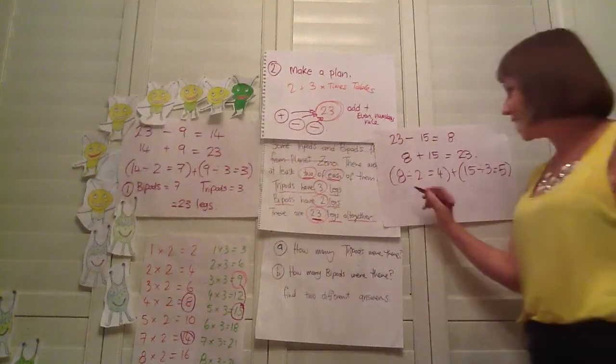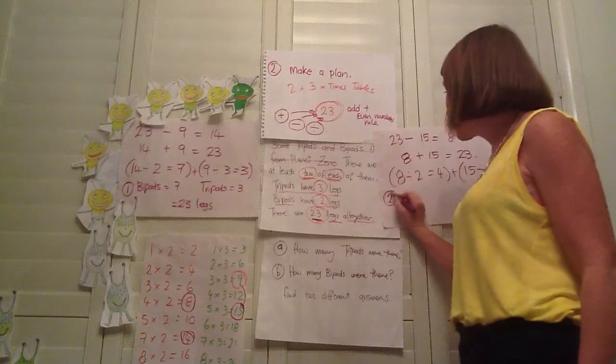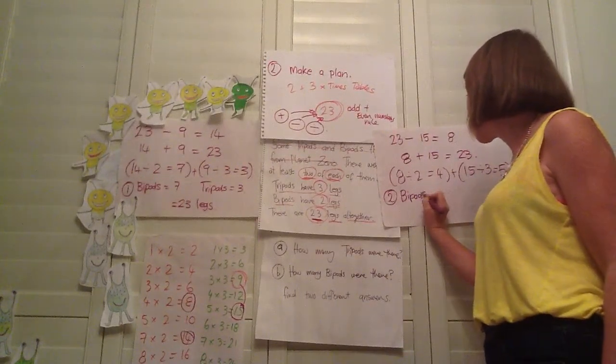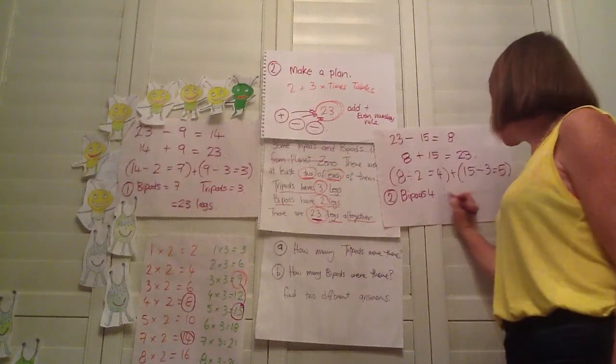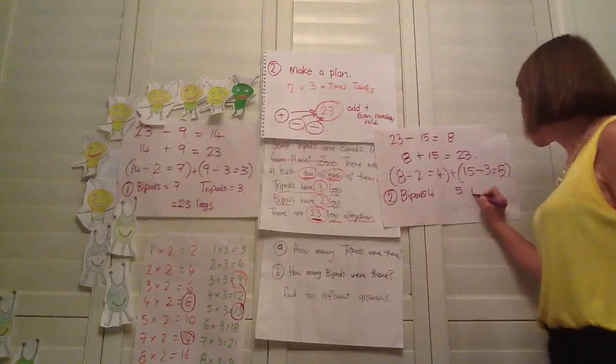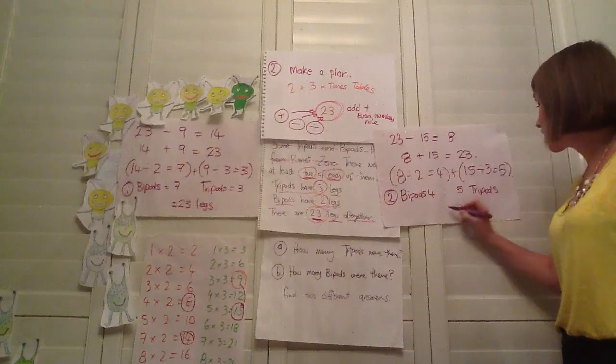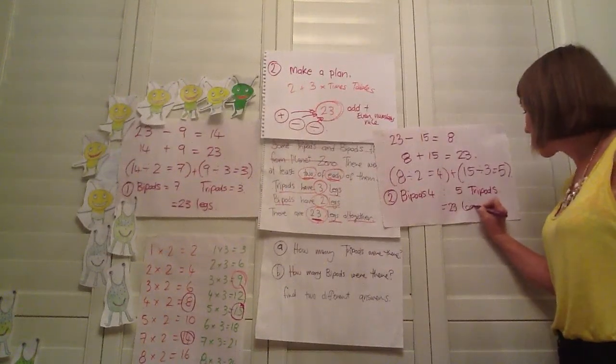So eight divided by two equals four plus 15 divided by three equals five. Okay. So we've got our answer, our second answer, which is there are four bipods and five tripods. And that should equal 23 legs.